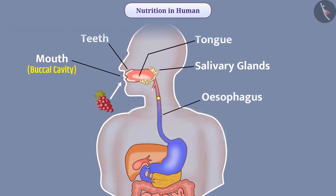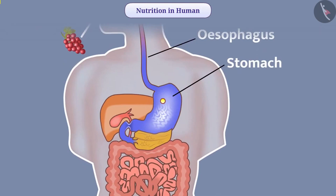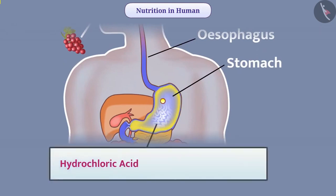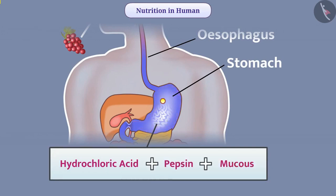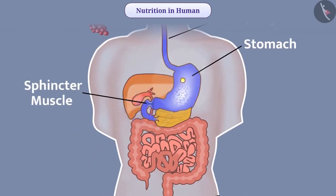After this, the esophagus passes the food from the mouth to the stomach. When food enters the stomach, it expands. Gastric glands in the wall of the stomach secrete hydrochloric acid, protein-digesting enzyme pepsin, and mucus. Hydrochloric acid creates an acidic medium and the enzyme pepsin works in that acidic medium. The mucus protects the inner lining of the stomach from acid. The sphincter muscle in the stomach regulates the release of acidic food into the intestine.